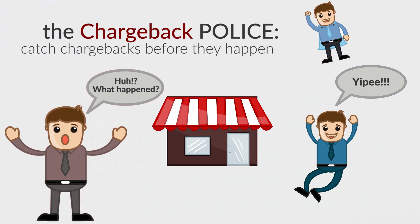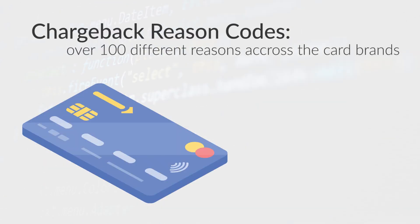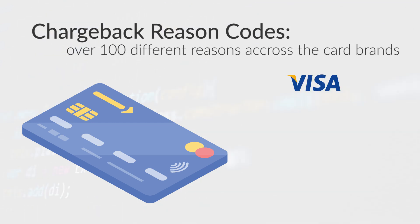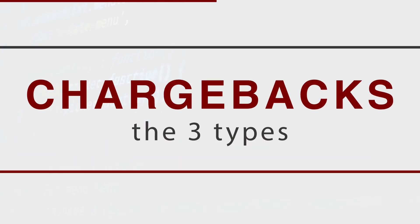However, there are chargeback services that can catch chargebacks before they ever get reported to the merchant account provider, and I'll talk more about that later on and in other videos in this series. There are over 100 different individual reason codes that exist between the four major card brands — Visa, MasterCard, American Express, and Discover — but today we're looking at the three general categories for chargebacks.